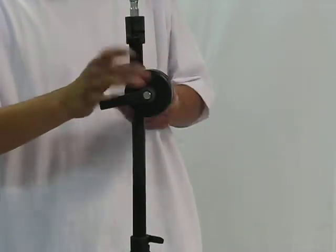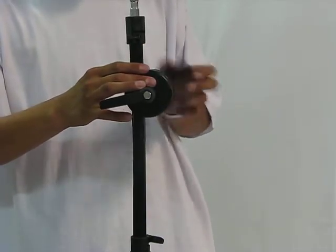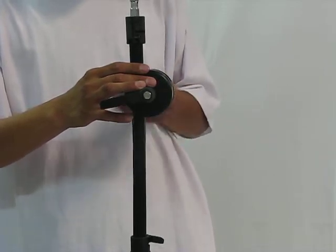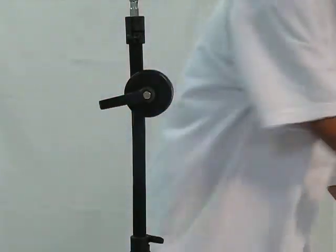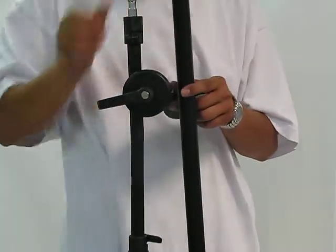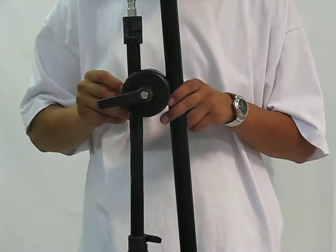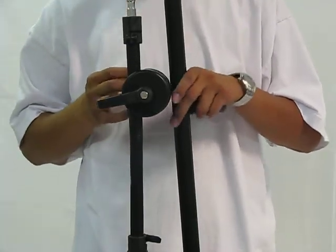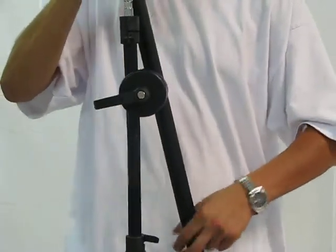After that, switch to the other side that says this is for the boom and loosen it. Then take the boom and put it in one of the holes. Be sure to match the hole and indentation inside the device. Make sure you match those.